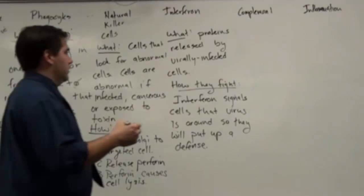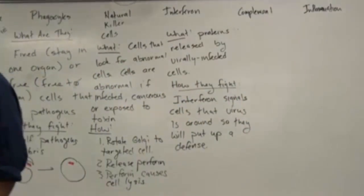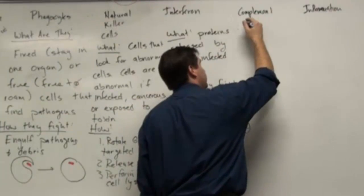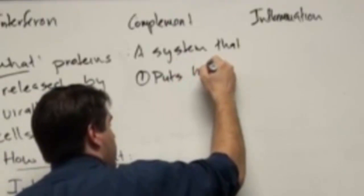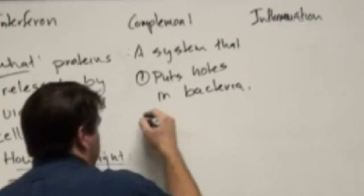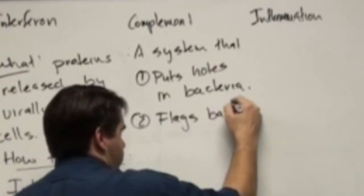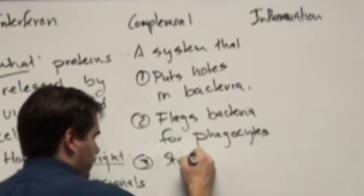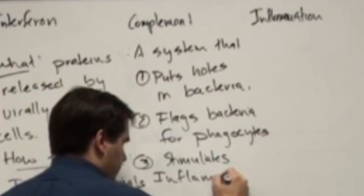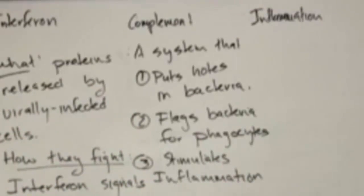Complements. This one's kind of a complex one. What? It's a system that puts holes in bacteria, flags bacteria for phagocytes, and it stimulates inflammation. It's a group of proteins. The main one is called C3. And the first thing I wrote is it puts holes in bacteria. So if it finds its target, it finds other C proteins, and they assemble in a donut shape in the wall of a bacteria and put a hole in it. Again, if you put a hole in a bacteria, it's going to leak out and it's going to die.